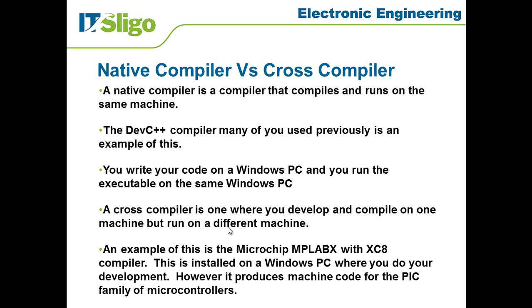A cross compiler is different. This is one where you develop and compile on one machine, but the plan is to run it on a different machine, and it wouldn't actually run on the same machine as you're developing it on. An example of this is the one that we're going to be using most of the time in this subject, which is the Microchip MPLAB X and XC8 compiler. That's a big mouthful to hear all at once, and I'll be doing another video to explain a little bit to you about what those different terms mean.